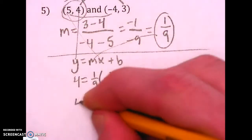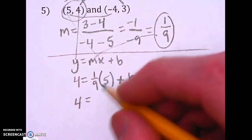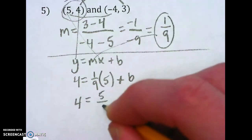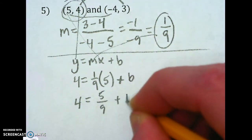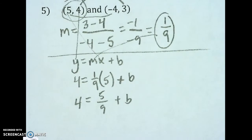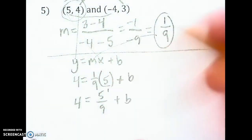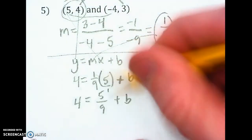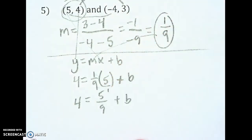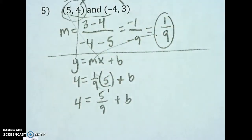So I get 4 equals 5 over 9 plus b. I just noticed this. You could also put this over 1 and do 1 times 5 and 9 times 1 and that's obviously 5 over 9.